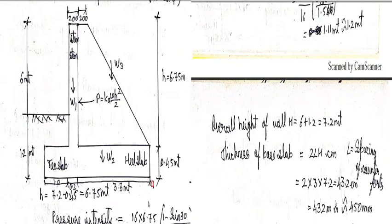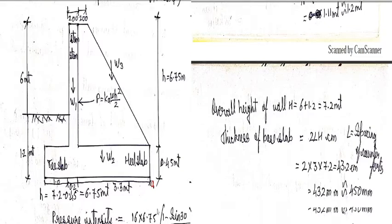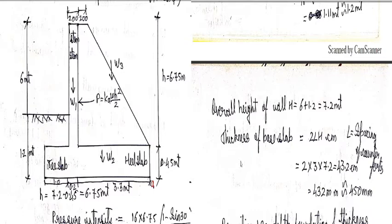So 43.2 centimeter we got. That is 432 mm rounding out to 450 mm. So here you can see the thickness of the base slab is working out to be 0.45 meter.